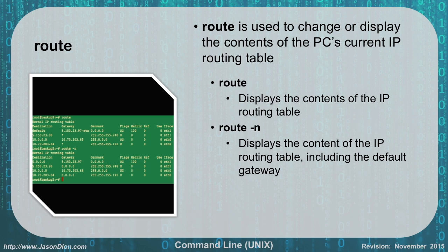Route works very similarly to the Windows version — it allows you to change or display the contents of the IP routing table. On Unix, just typing 'route' will print it to the screen, whereas in Windows we use 'route print'. You want to look for the default gateway: here we have default gateway 0.0.0.0 with a mask of 0.0.0.0, going out through the gateway to leave the network. Using 'route -n' will display the routing table including the default gateway, which doesn't appear with plain 'route'.